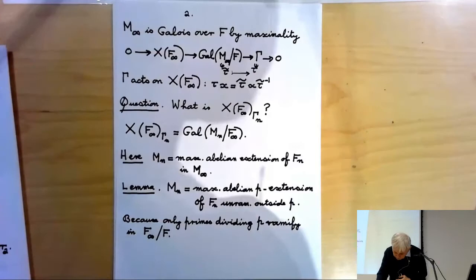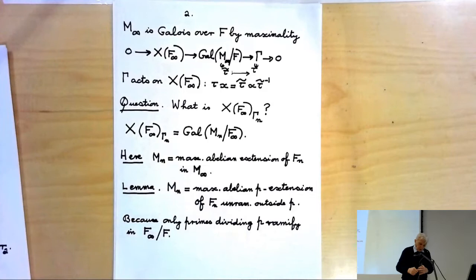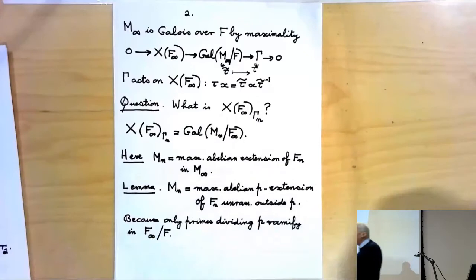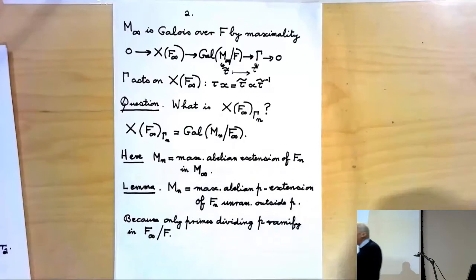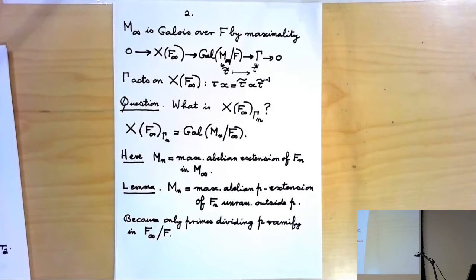What you see immediately is that X(F∞)_{gamma_n} has to be the Galois group over F∞ of the maximal abelian extension of F_n in M∞. Because gamma_n is the Galois group from F∞ down to F_n. And there's a basic little lemma in this special case: M_n, the maximal abelian extension of F_n contained in M∞, must always contain F∞ because the only ramification in F∞ over F is by primes above P.